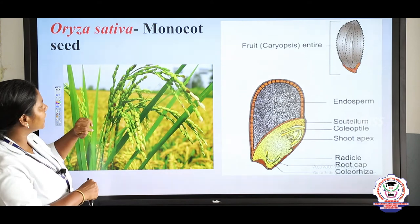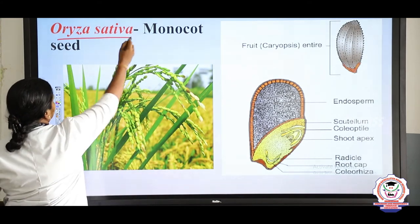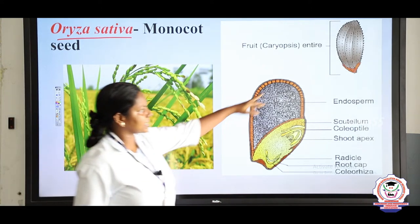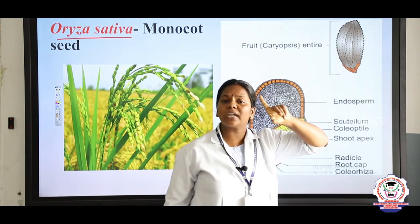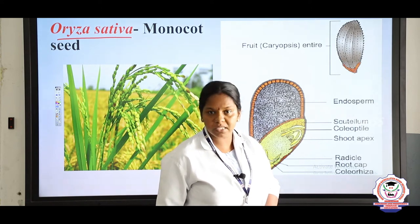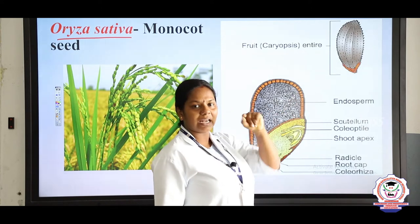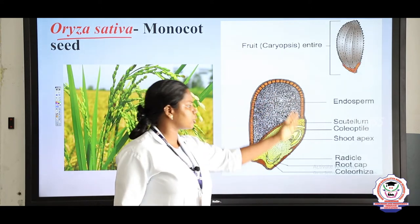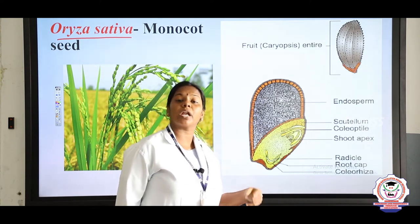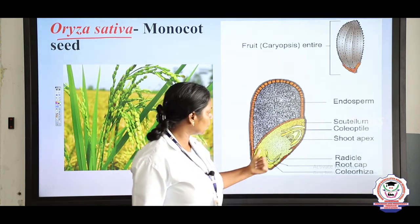Now let us see the structure of the monocot seed. The example is Oryza sativa — the paddy plant. It possesses only a single cotyledon and is called a caryopsis. It does not burst to disperse seeds.